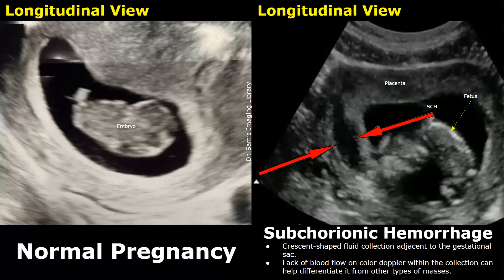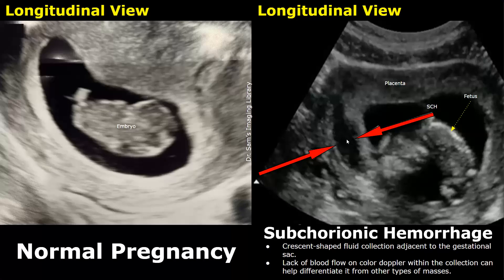The shape of the hemorrhage is usually crescentic. Although color Doppler is not recommended in early pregnancy, it can be used sparingly in some situations such as a subchorionic hemorrhage. A very short application of Doppler can be used to check for vascularity. The hemorrhage will not show any blood flow, and no Doppler signals will be found inside the fluid collection. This feature differentiates it from other masses.